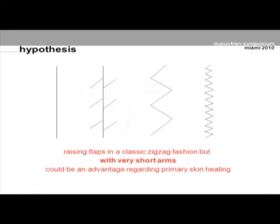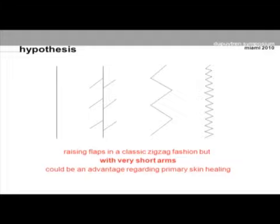My hypothesis was that, given the fact that straight-line incisions are forbidden — as everybody knows they lead to skin contractures — we have other solutions like Z-plasties, but with rather large flap elevation, or Brenner incisions, also with relatively broad flap elevations. I was sailing on the Geneva Lake, and when you are against the wind you have to tack from one side to the other. I thought maybe I could do small tacks — raise flaps in a very short way — so that we could increase primary skin healing.